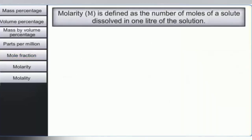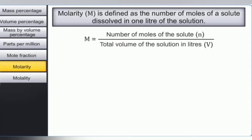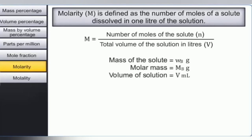Let us now discuss another frequently used term: molarity. Molarity is defined as the number of moles of solute dissolved in 1 litre of the solution, and is represented by capital M. Mathematically, M equals the number of moles of solute divided by the total volume of the solution in litres. The number of moles of solute equals the mass of solute in grams divided by the molar mass. So, if Wb grams of solute with molar mass Mb is present in V mL of solution, then M equals (Wb / Mb) multiplied by (1000 / V).